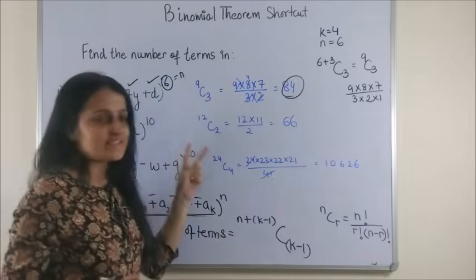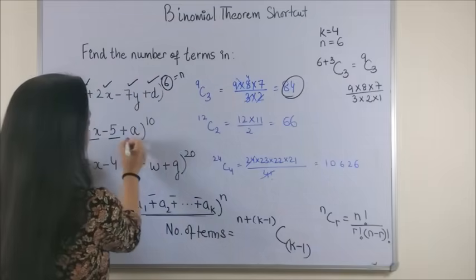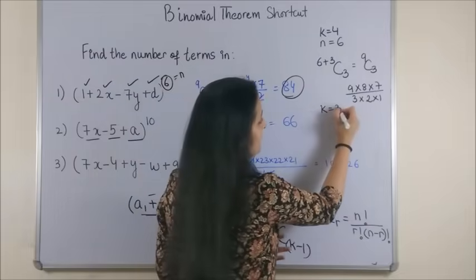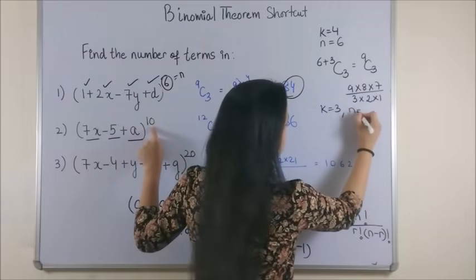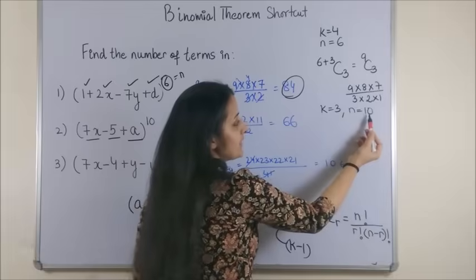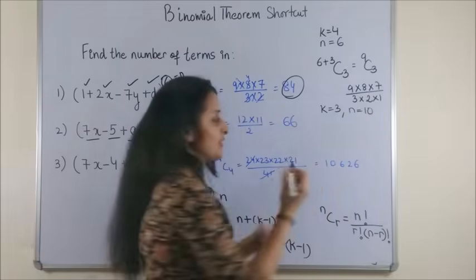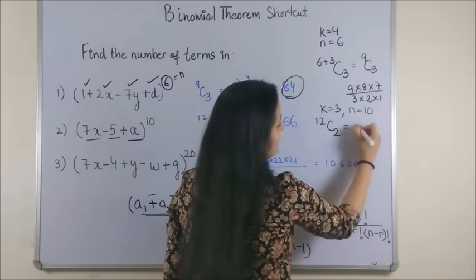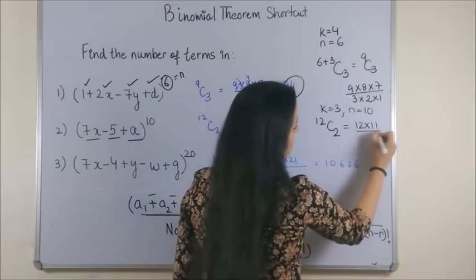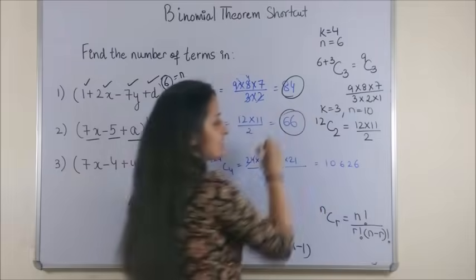Similarly, for the second one, as you see, the number of terms are 3. So k is 3, n over here is 10. So all you need to do is 10 plus k minus 1, that gives us 12. So 12C2. This would be 12 into 11 by 2 which is simply your 66.